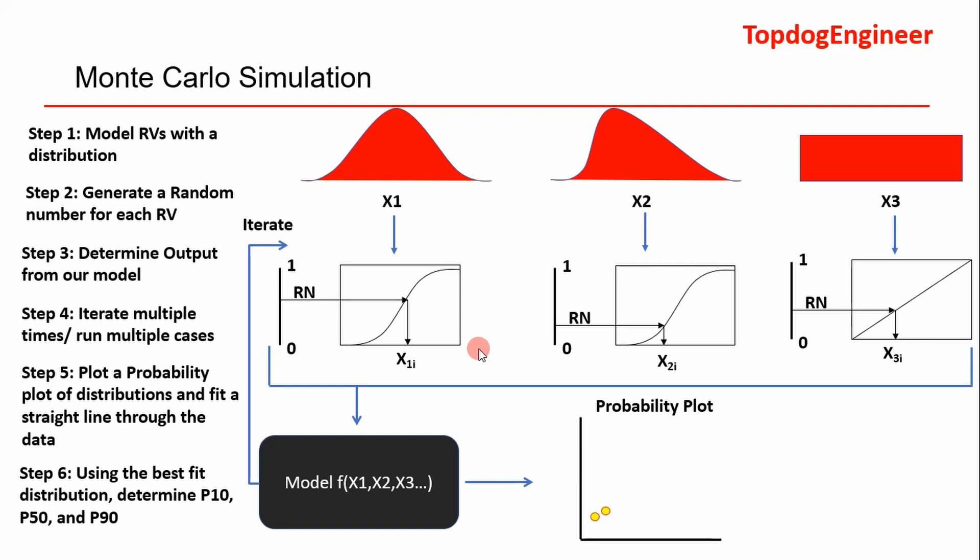Once you've iterated several times—it can be a thousand cases, ten thousand cases, a hundred thousand, whatever, just do it to where you feel comfortable—then you have an array of data that you can arrange on a probability plot as shown here. A probability plot, if you haven't seen this before, is also kind of alluded to as a quartile-quartile plot.